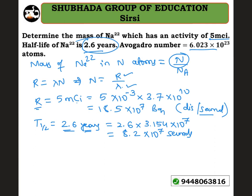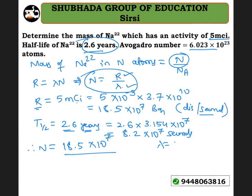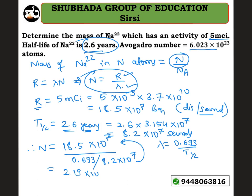Now substitute into N equals R divided by lambda. Lambda equals 0.693 divided by t-half, which is 0.693 divided by 8.2×10⁷. So N equals 18.5×10⁷ divided by (0.693 / 8.2×10⁷). Calculating this gives N equals 2.19×10⁶ atoms.